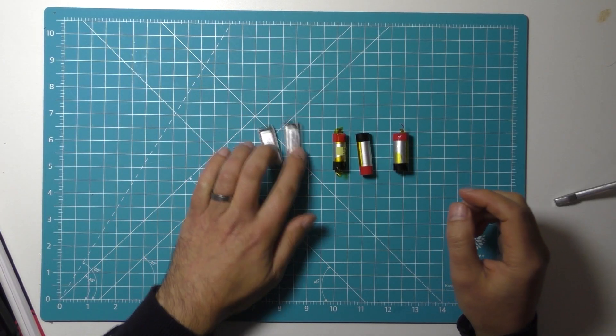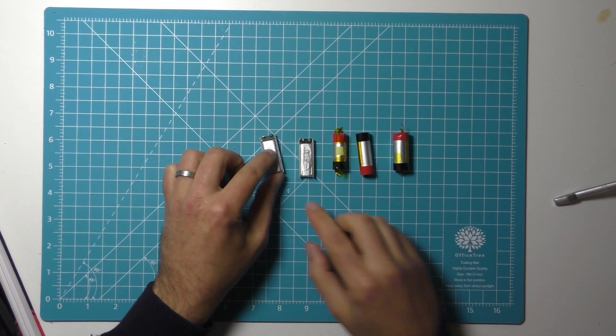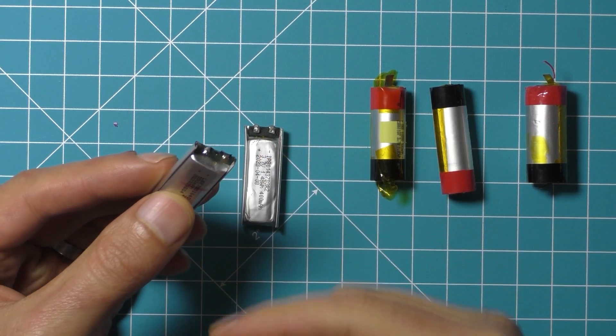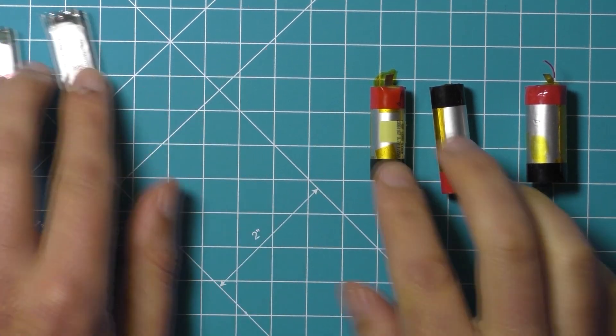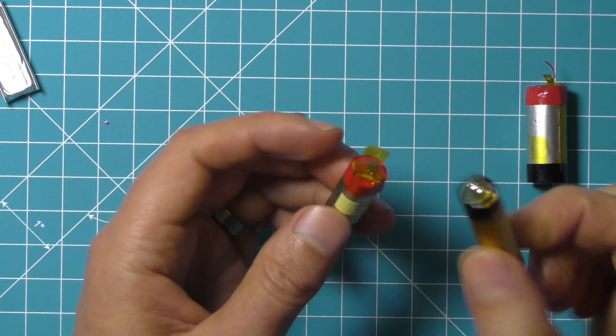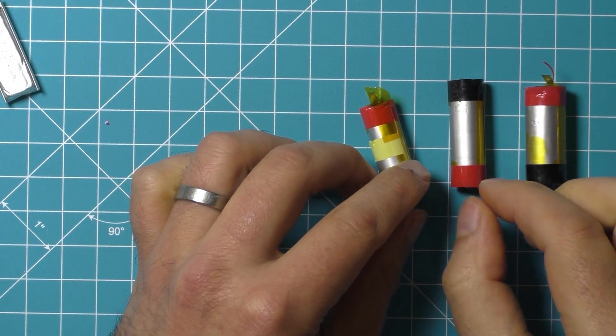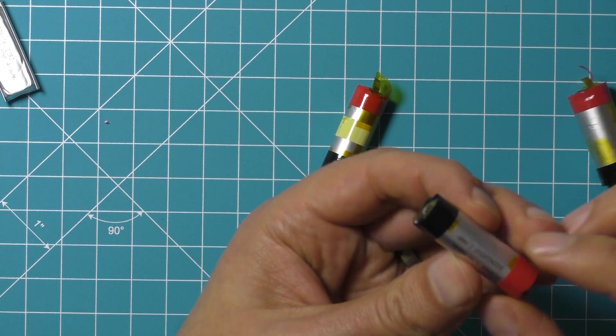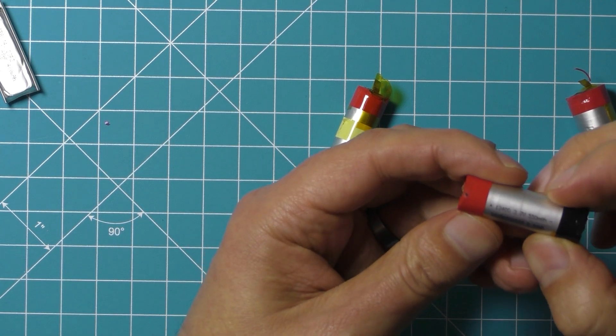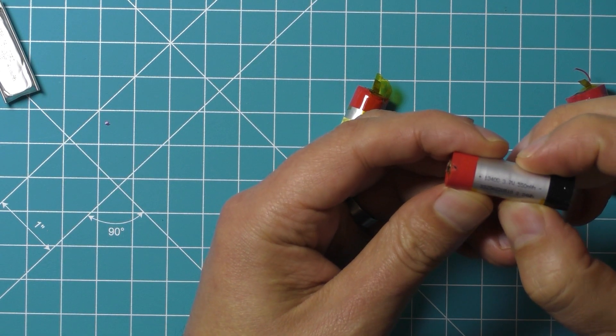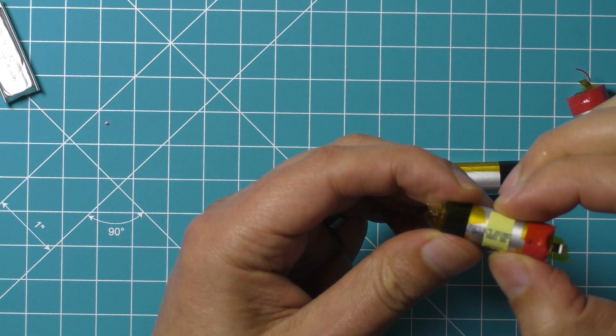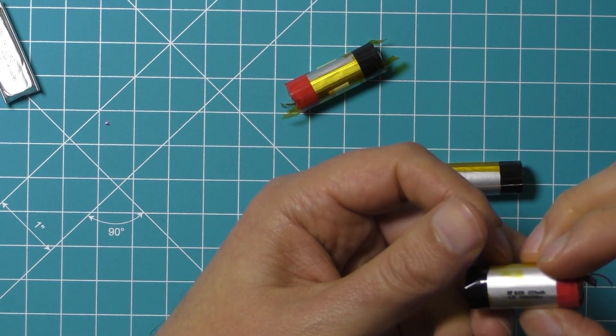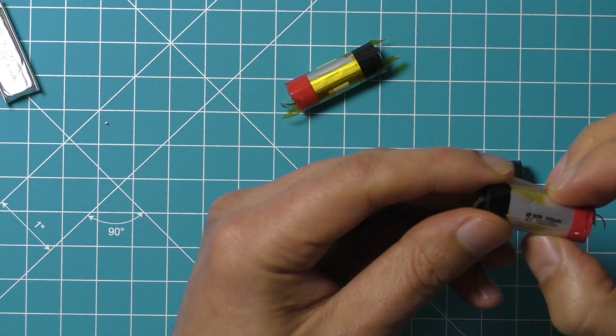There's a surprising range of sizes of cells inside these. These ones that have the positive and negative on one end are called lithium polymer cells, and these ones that are more like cylinders are called lithium iron cells. They usually have a capacity rating written on the side. For example this one's a 550 milliamp hour cell, this one's a 360 milliamp hour cell, and this one is a 650 milliamp hour cell.